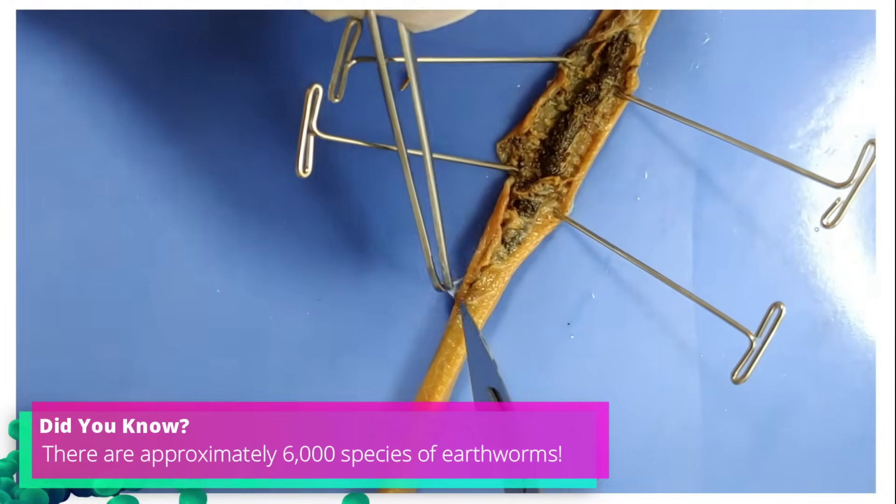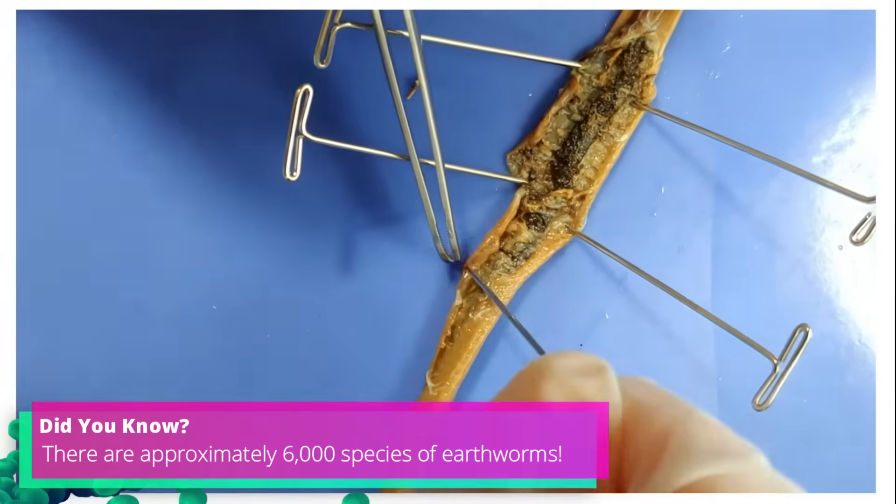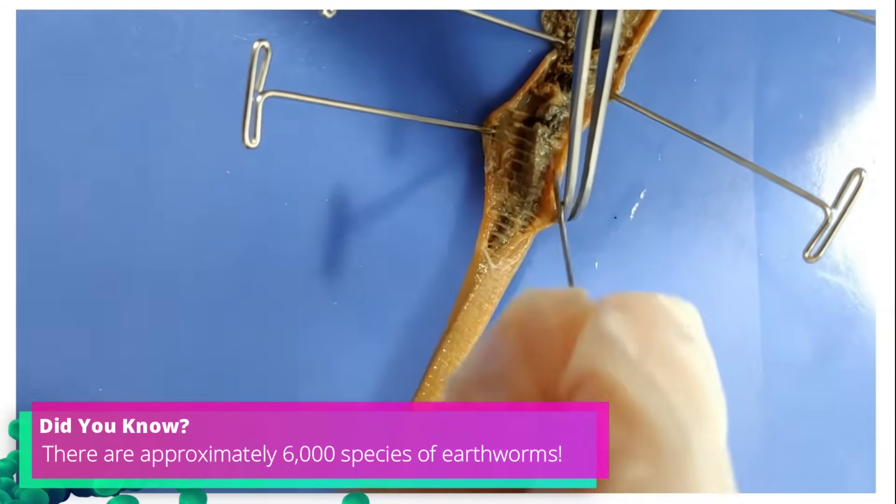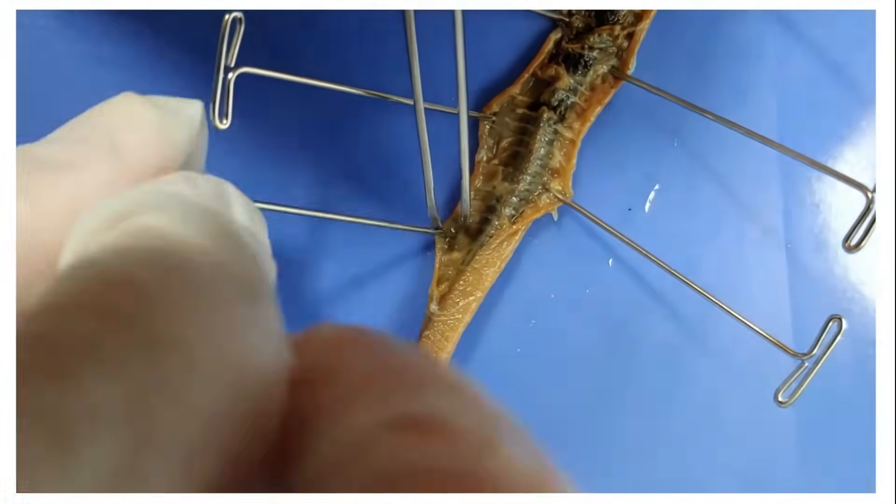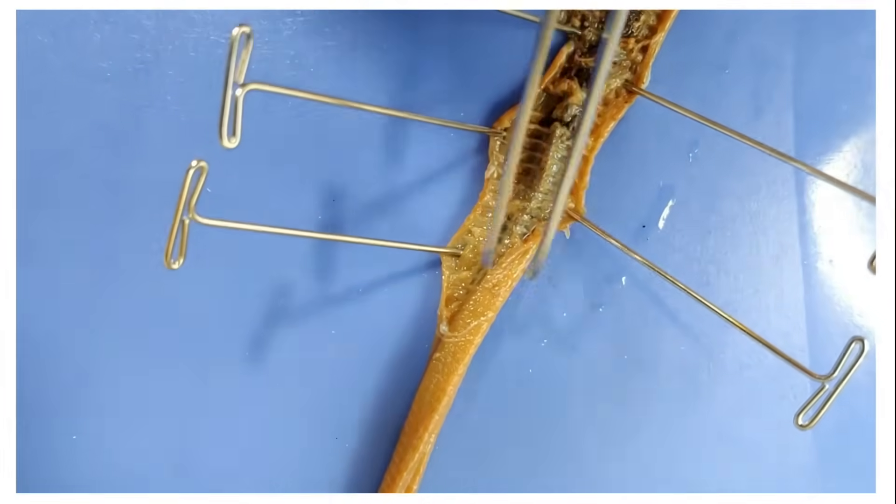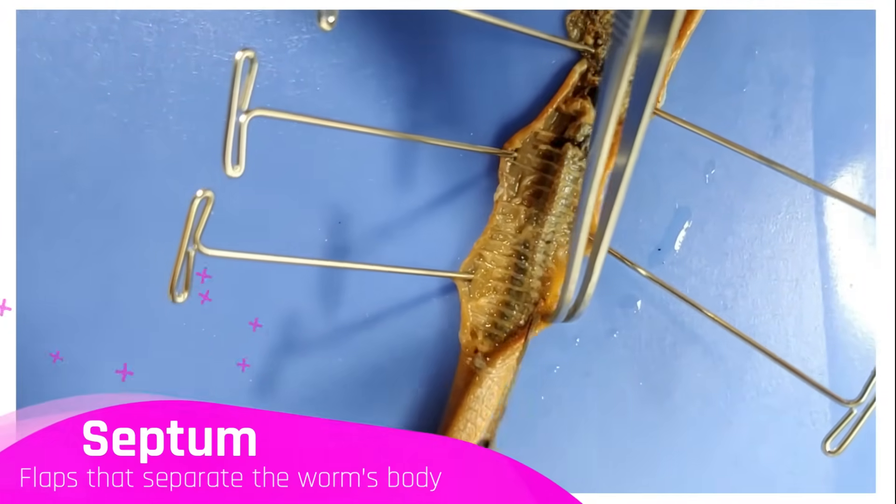Now worms are segmented animals and when I make the cut you can see that there are these flaps attached to the skin that divide the worm into segments. These flaps are called the septum.